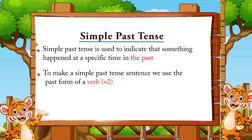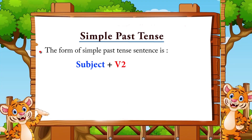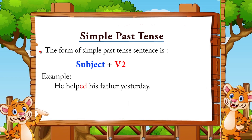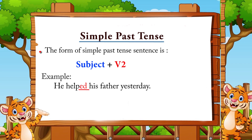To make a simple past sentence, we use the past form of a verb — that is verb 2. The form of simple past tense is: subject plus verb 2. Example: 'He helped his father yesterday.' The base form of the verb is 'help', but to make it past we add -ed: help → helped. He helped his father yesterday.